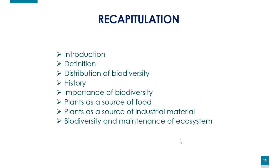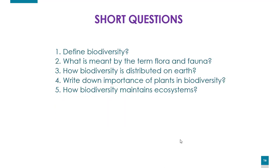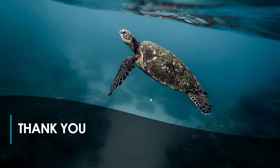To summarize, we have covered the introduction, definition, distribution across different regions, history, and the importance of biodiversity — including plants as a source of food, medicine, and industrial materials, and their role in maintaining ecosystems. Now here are some short questions from your book: define biodiversity; what is meant by flora and fauna; how is biodiversity distributed on earth; write down the importance of plants in biodiversity; how does biodiversity maintain the ecosystem. Mark these five short questions in your book. Thank you — if you have any questions, you can ask your concerned teacher.